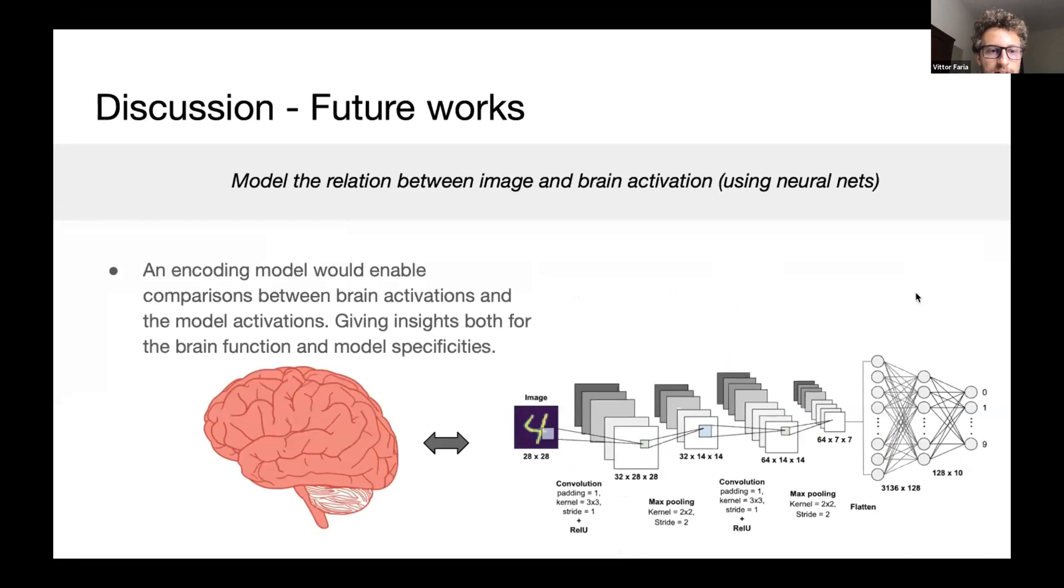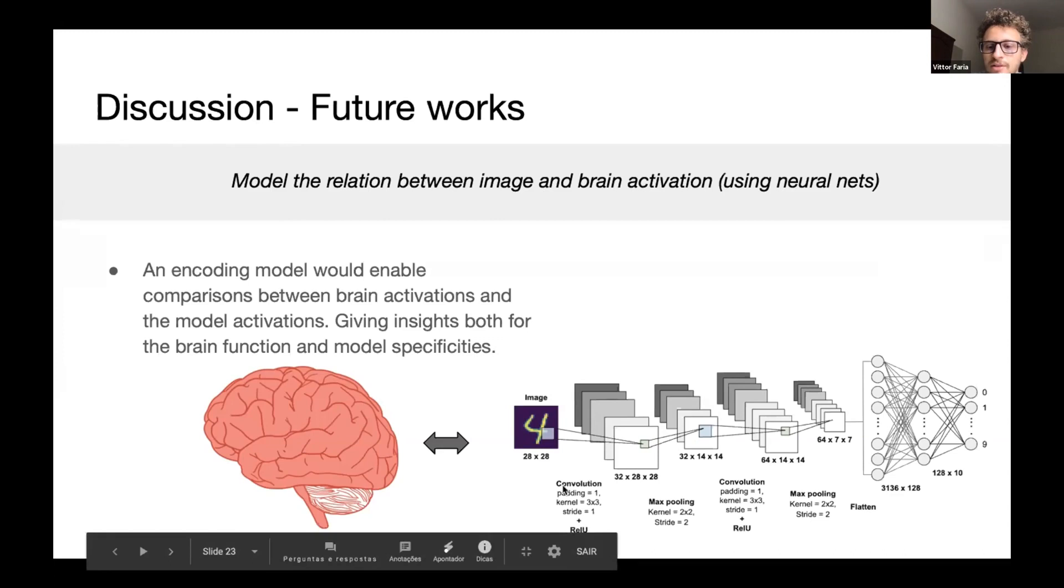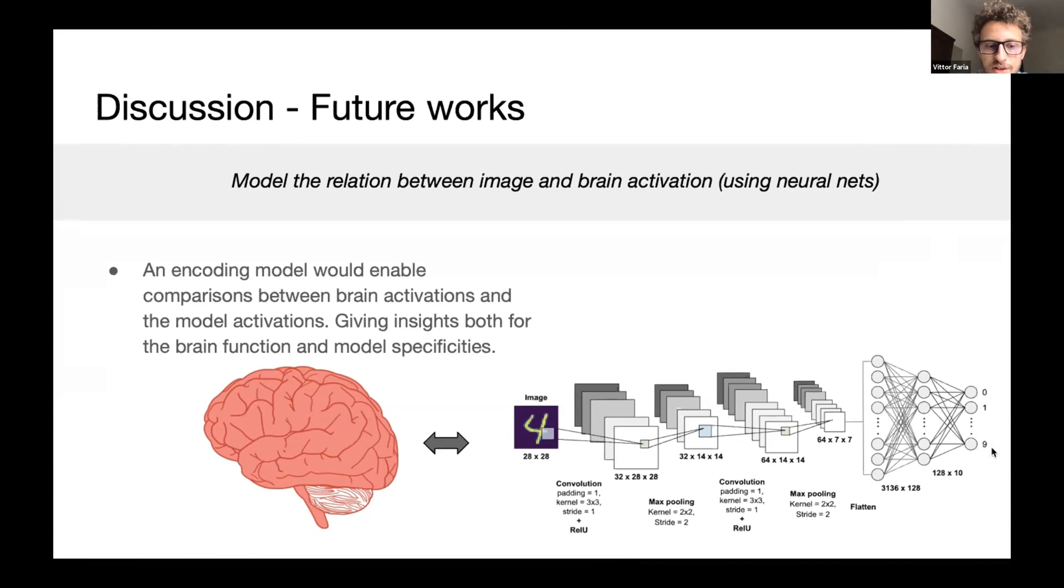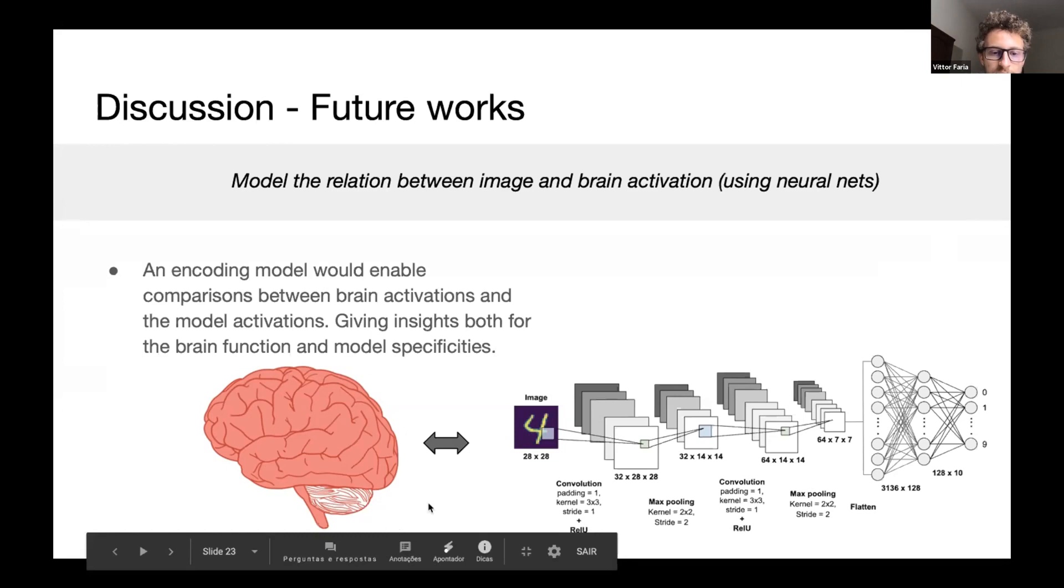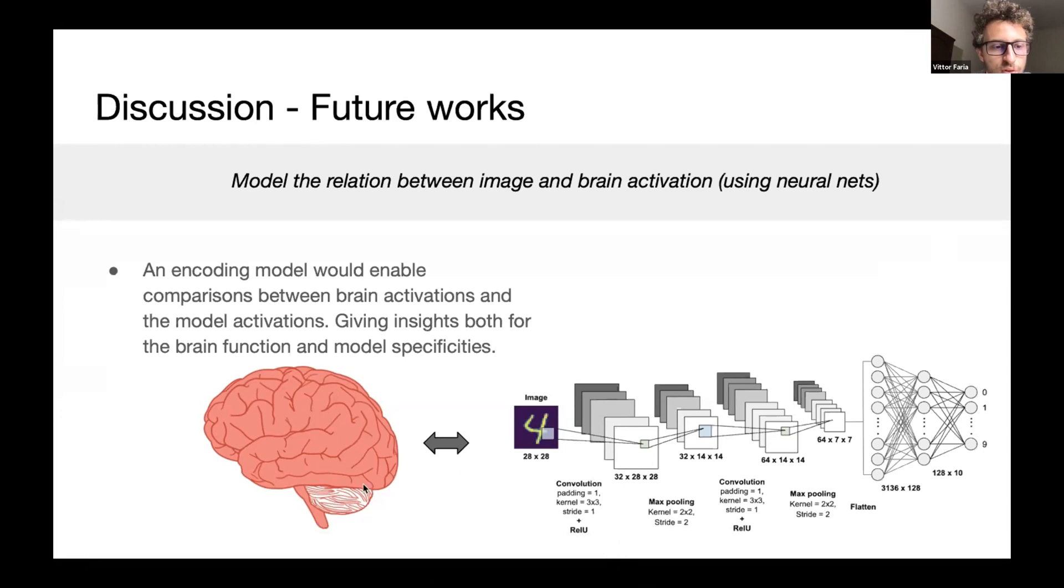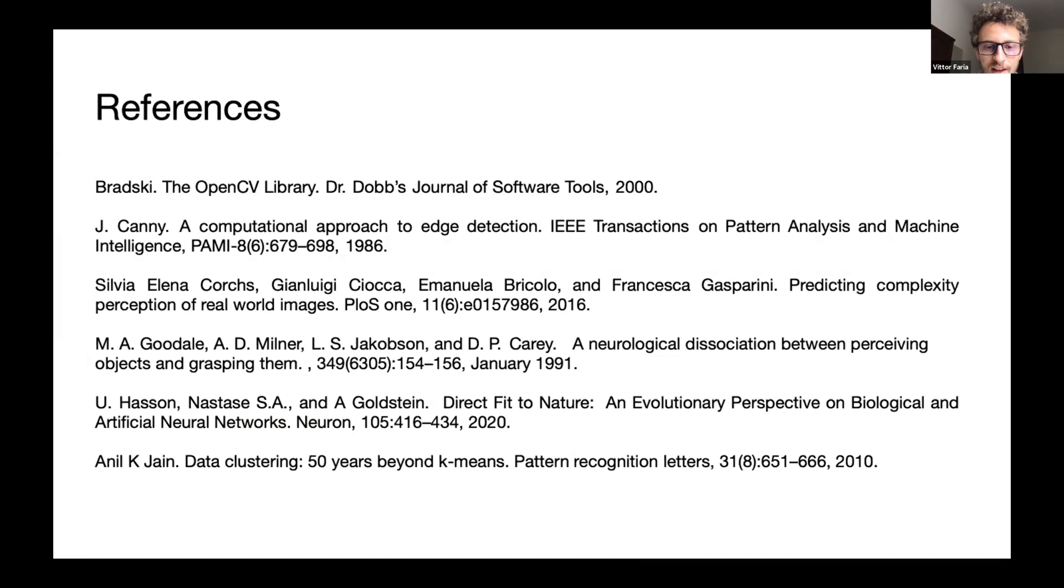And all the future work is to find, is to model the relation between image and brain activation using a convolutional neural net. An encoding model, which takes as input the image and tries to predict the neural activations on each voxel would mimic the brain. And we could make some comparisons between these two, the model and the real brain. And this would give insights both for the brain function and the model specificities.